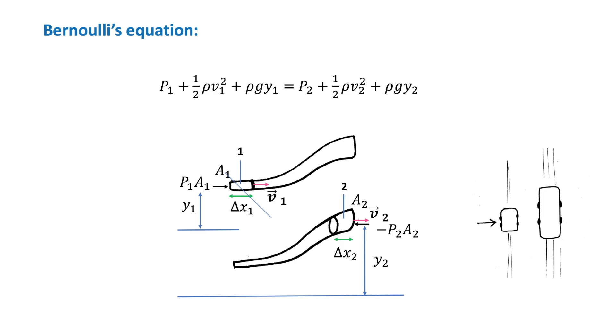So, we will discuss now Bernoulli's equation. It describes how the pressure of a fluid varies with speed, and with its elevation above the Earth's surface. So, this equation states that the sum of the pressure and kinetic energy per unit volume, which is half rho V squared, and the gravitational potential energy per unit volume, which is rho GY, has the same value at all points along a streamline.